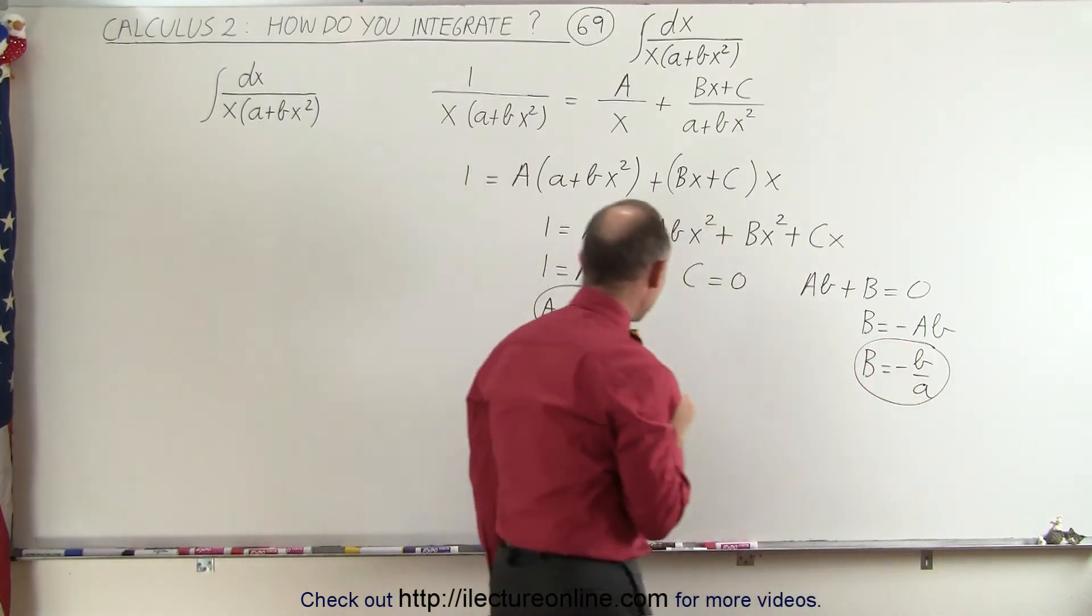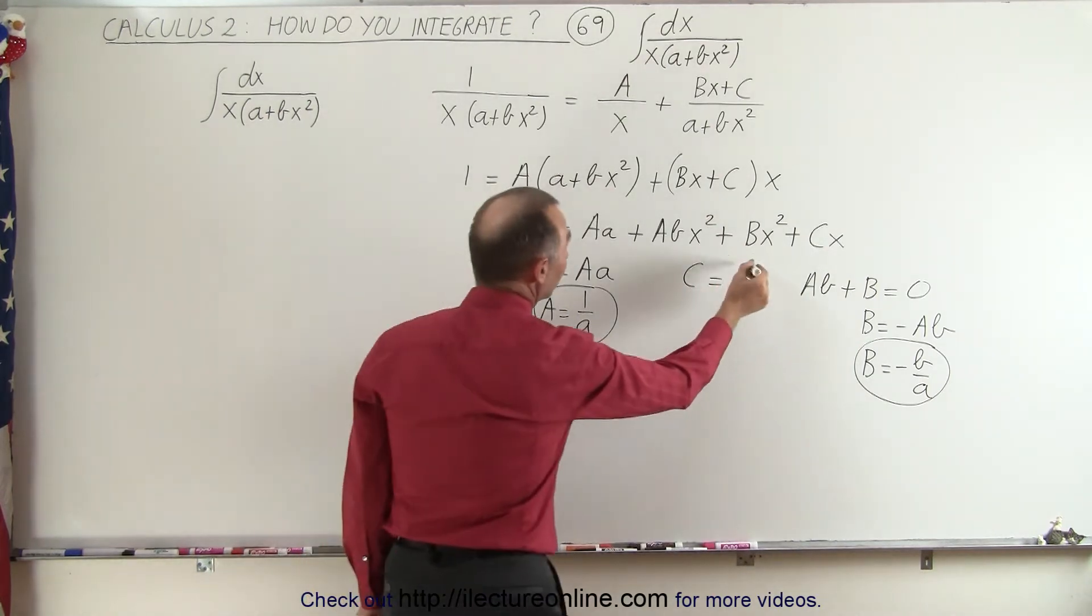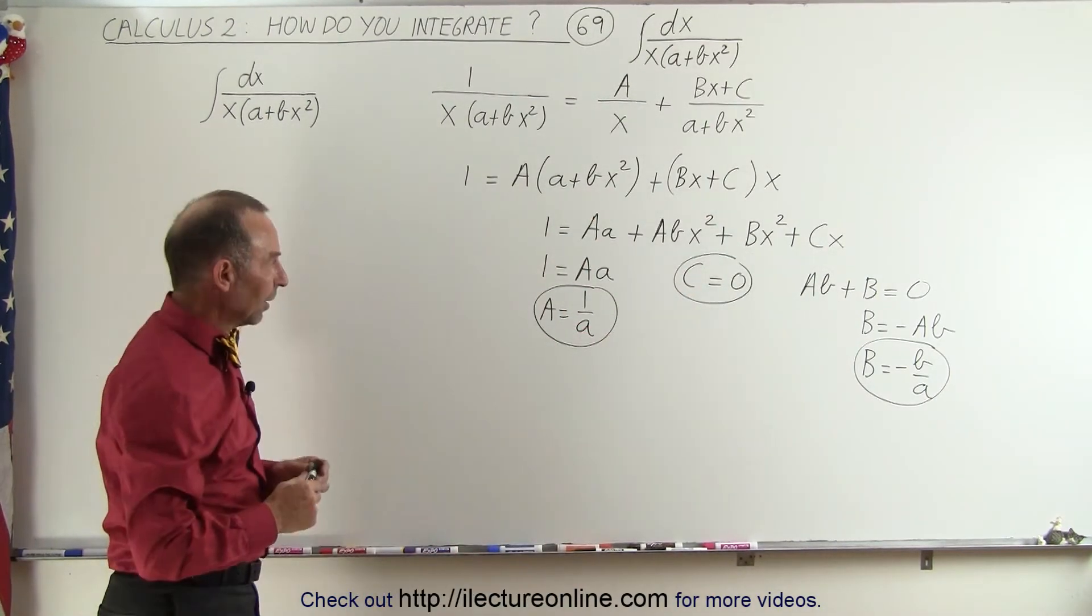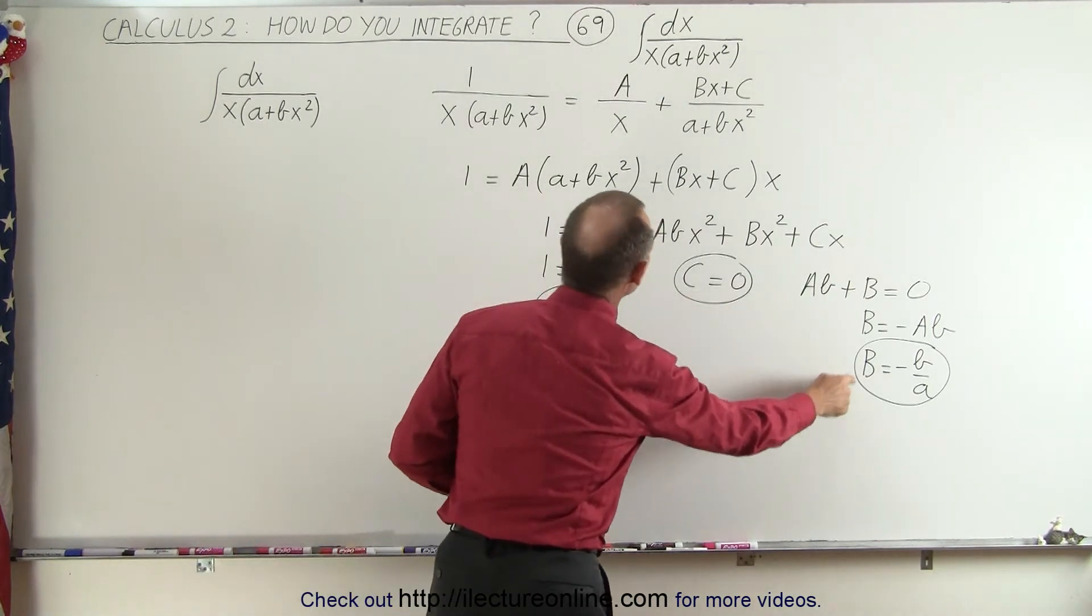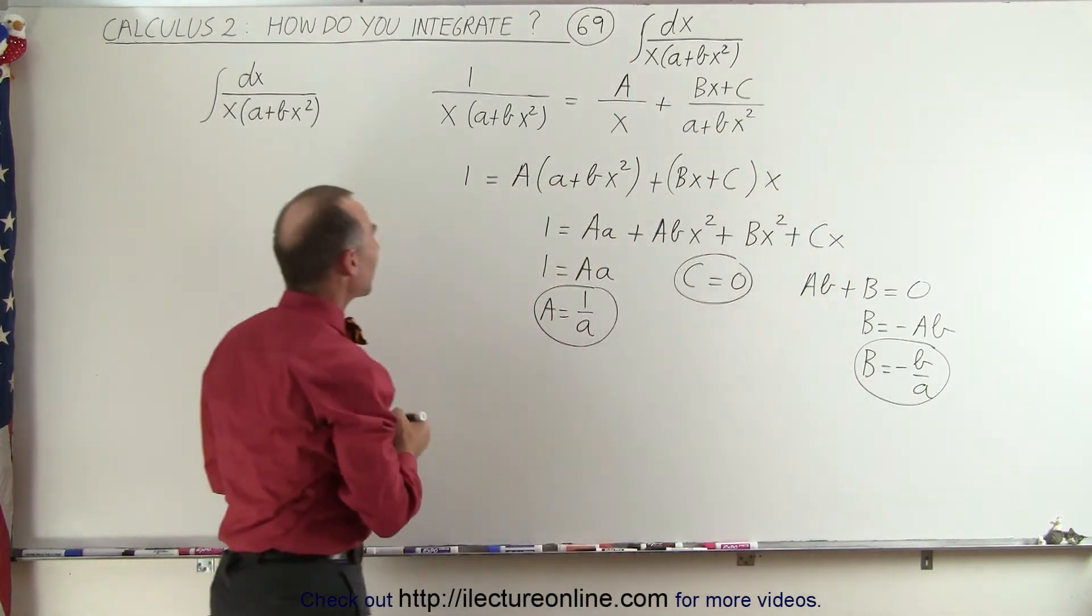So now that we know what a and b are equal to, and c as well because c is equal to 0, so we can now go ahead and substitute a, c, and b into our two fractions to see what we get.